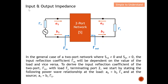Let's start the discussion on input and output impedance in a general case of a two-port network, where S12 is not equal to zero and S21 is not equal to zero. The input reflection coefficient will actually depend on the value of the load. This means the input reflection coefficient will depend on the source load. The load will be determined by ΓL at port 2, as shown.